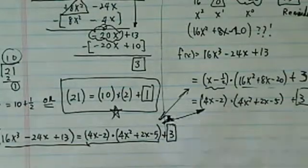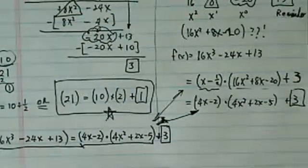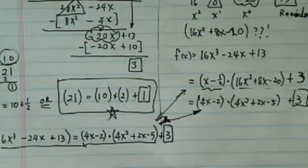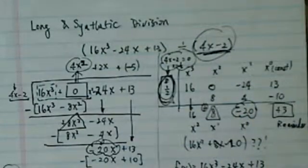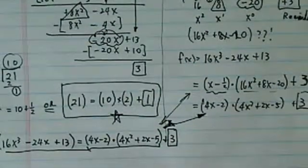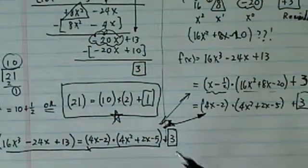So this is how we do synthetic division when the coefficient, or when the thing you're trying to divide, does not have a simple quote-unquote roots in there. This is how you handle and get around it. In the end you do end up with exactly the same thing.